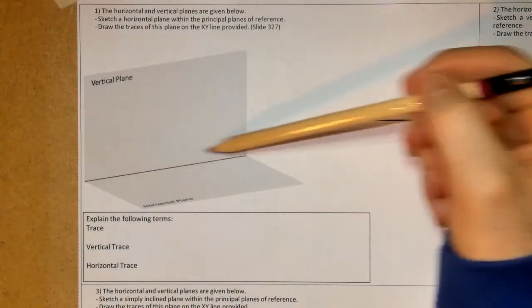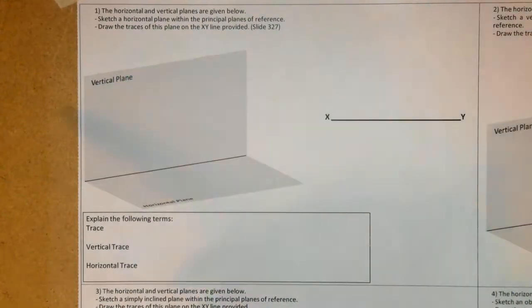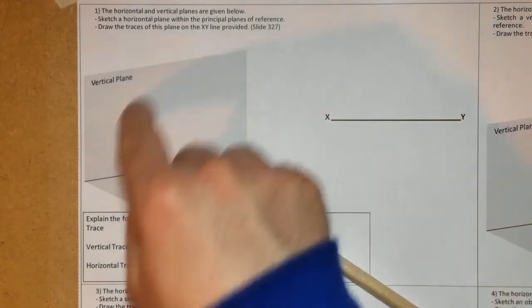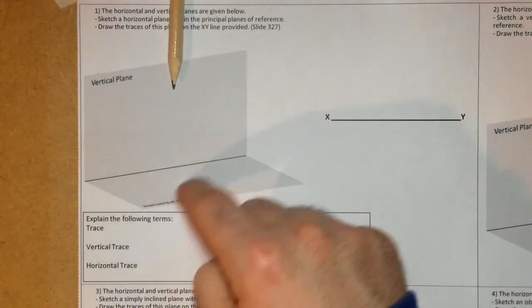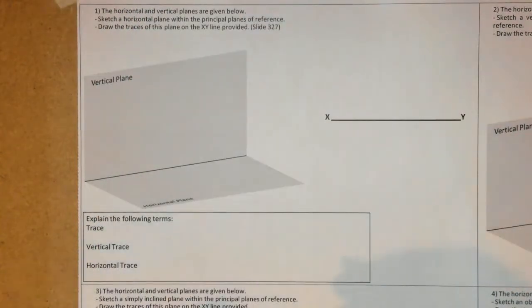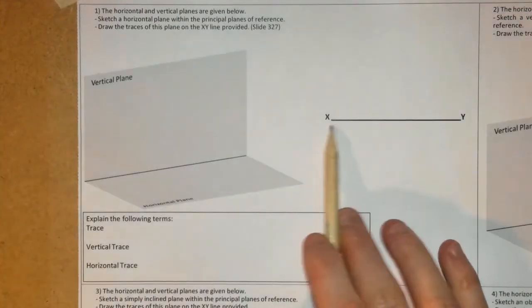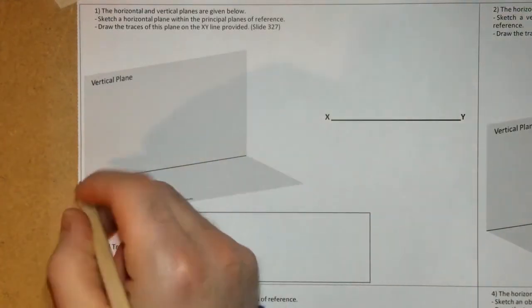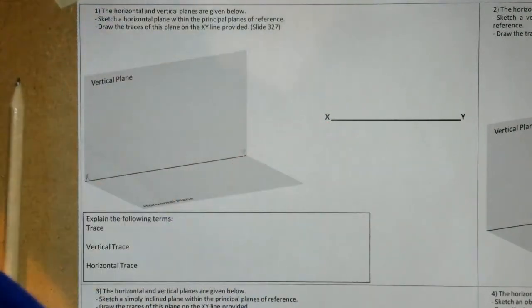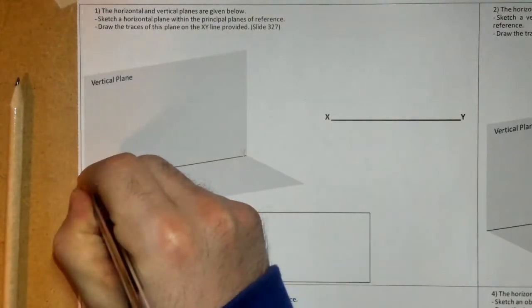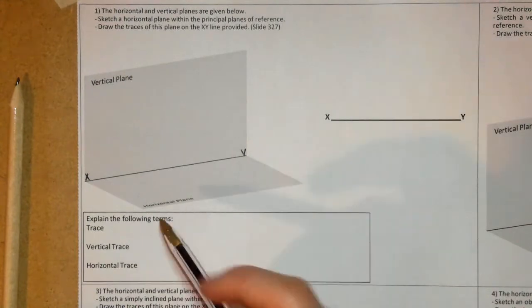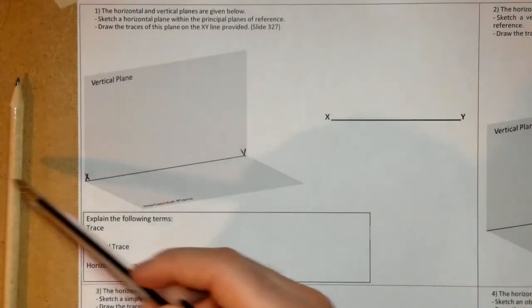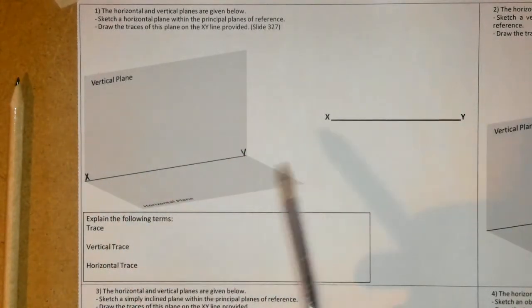We have the vertical plane here — that's primarily where your elevation view is drawn. An object is projected onto the vertical plane. The horizontal plane is where our plan view or bird's eye view is projected. Where the two planes meet is signified by the XY line — where the vertical plane intersects the horizontal plane, that's the XY line. The principal planes of reference are always the vertical plane and the horizontal plane.